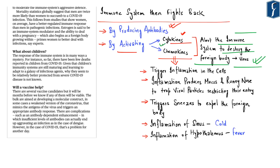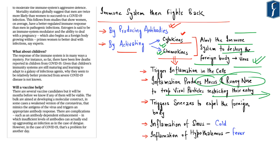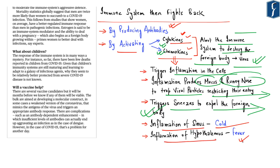Activation of cytokines and chemokines triggers inflammation in the cells, producing mucus and a running nose to trap viral particles and restrict their entry. This mechanism also triggers sneezes to expel foreign viruses from the system. Activation of cytokines and chemokines also results in inflammation of the sinus — which we normally refer to as a cold — and inflammation of the hypothalamus, which results in fever.